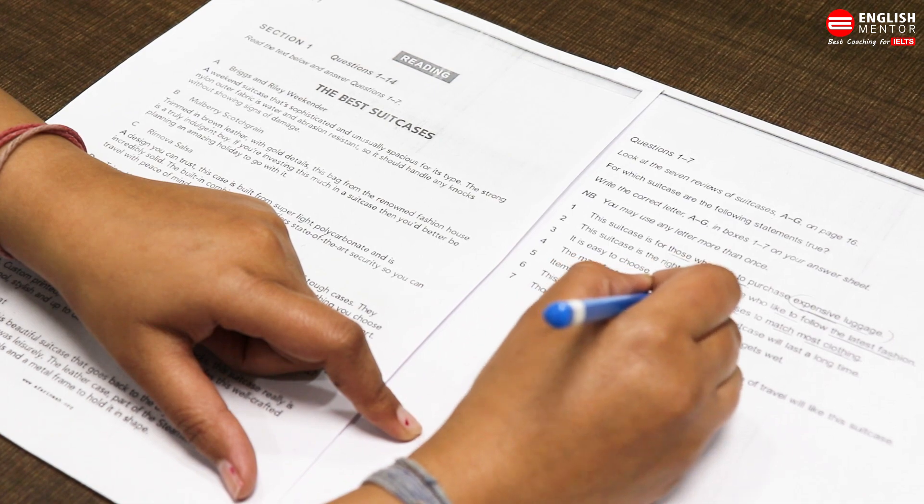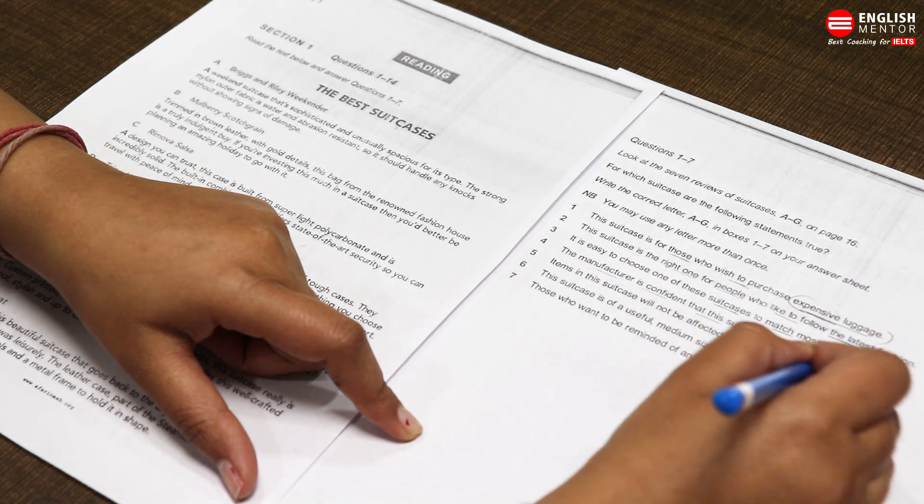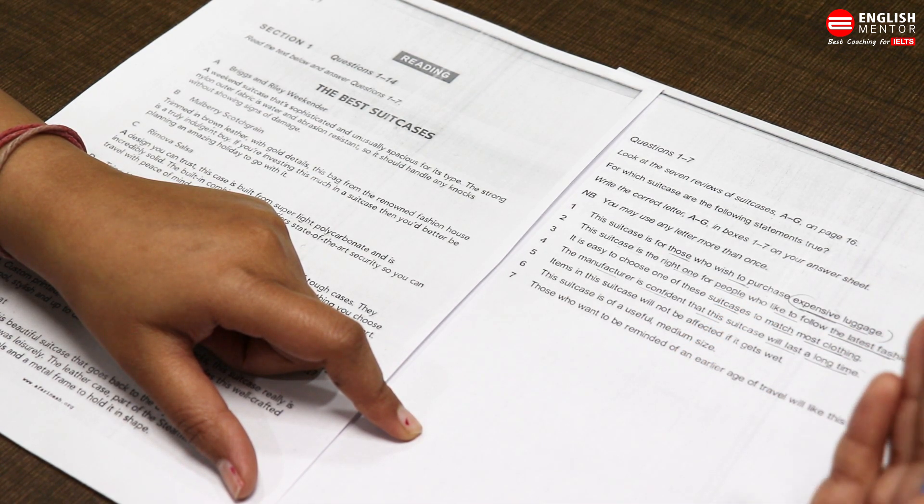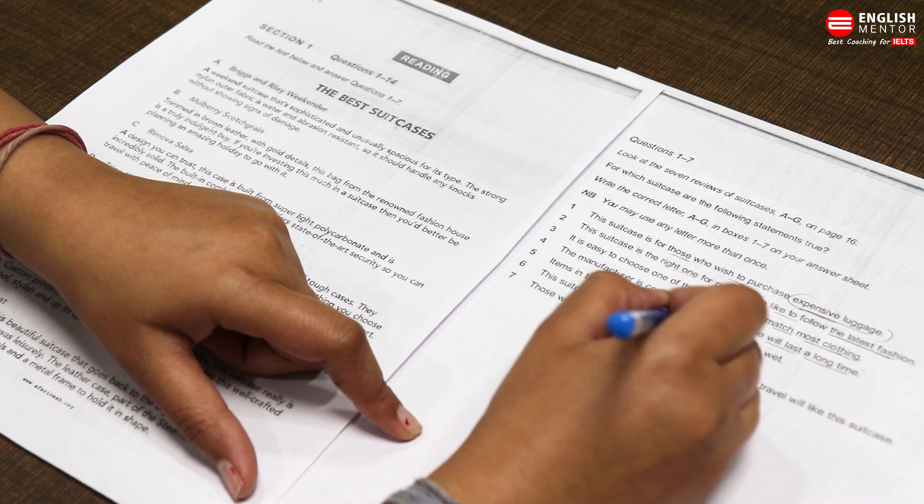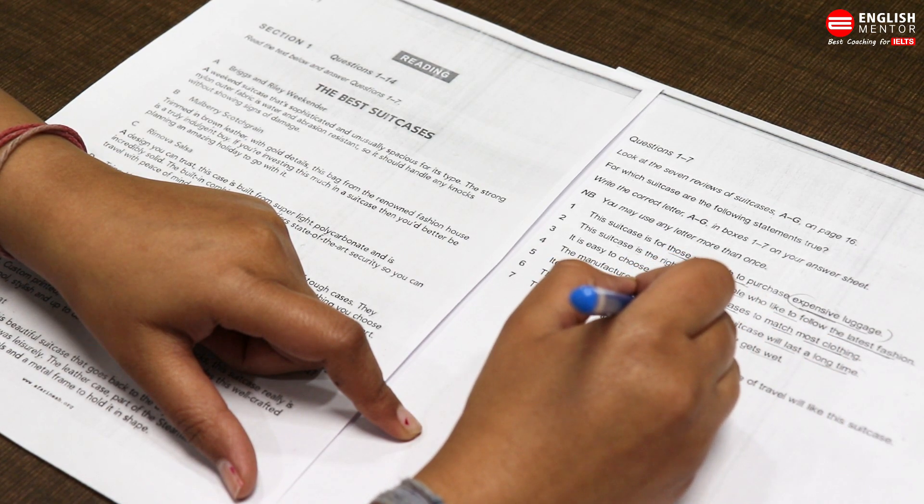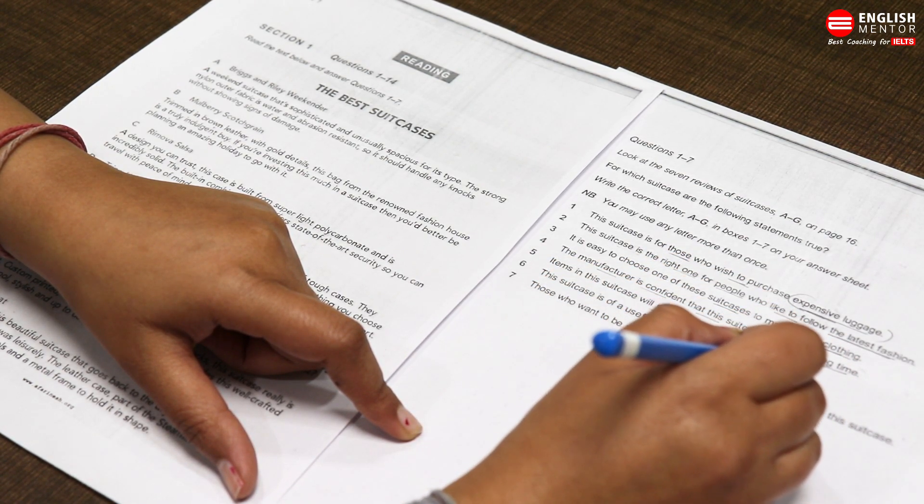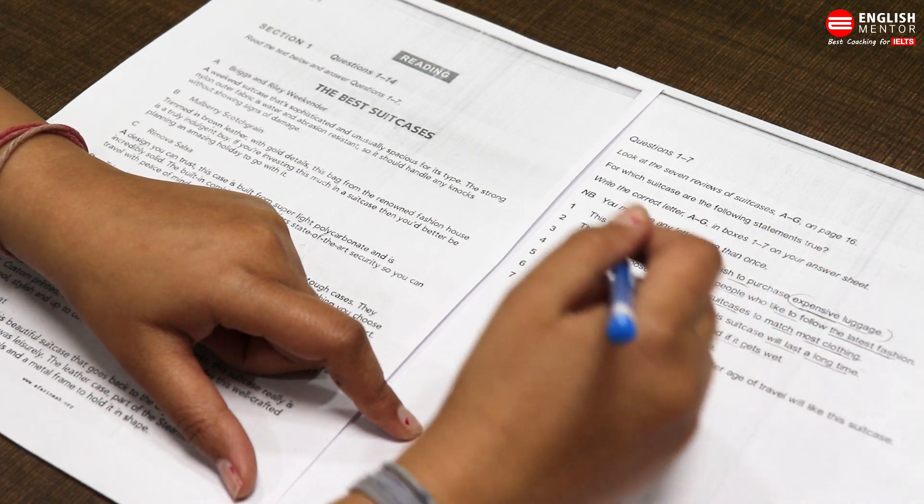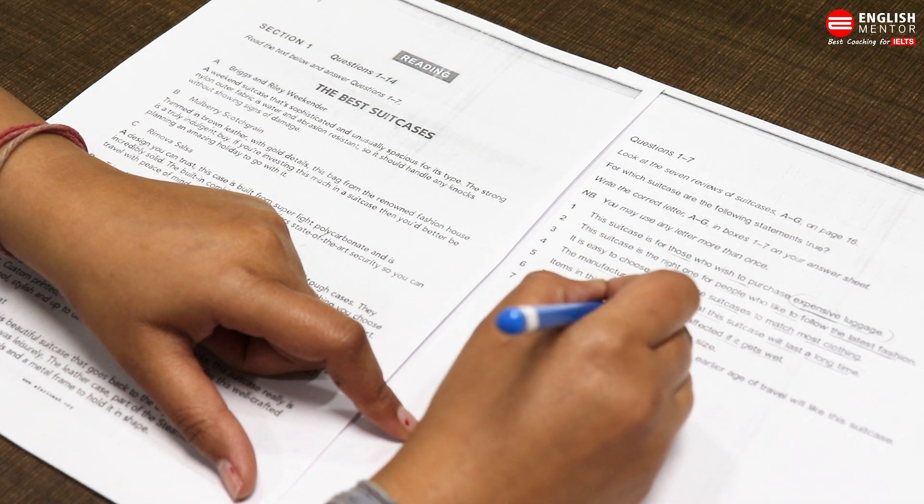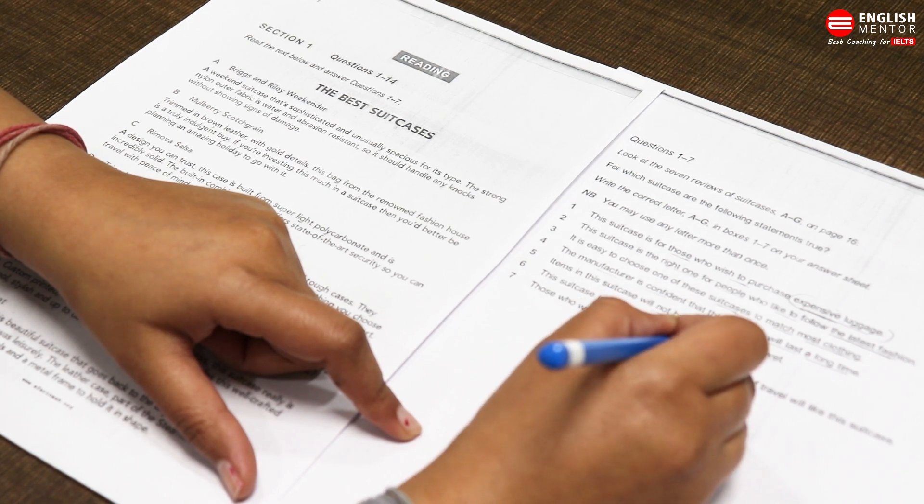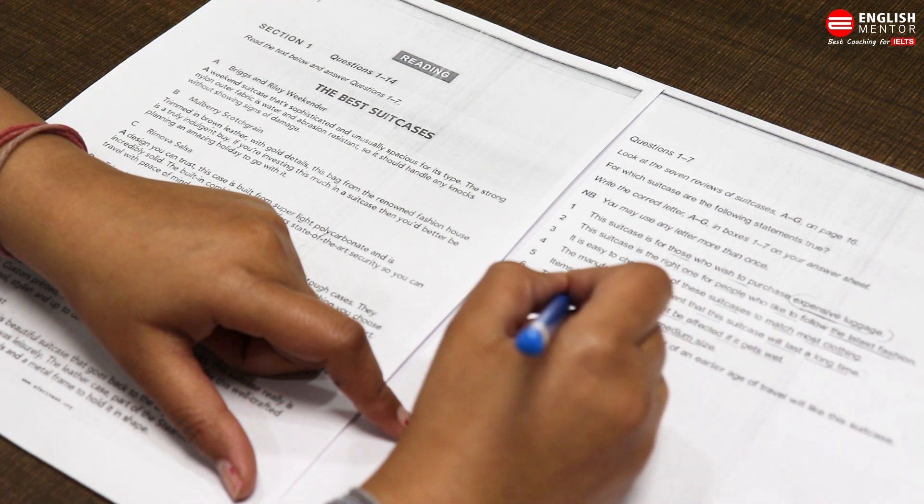Question four: The manufacturer is confident that the suitcase will last a long time. It means here they are talking about the durability of this suitcase. Ki yeh jo suitcase hai, yeh long lasting hai. Question five: Items in this suitcase will not be affected if it gets wet. Is suitcase mein rakhi hui items effect nahi hongi agar suitcase gila ho jata hai. Matlab resistance par baat kar rahe hain. Question six: This suitcase is of useful medium size. Yeh useful bhi hai aur compact in size hai, medium size ka hai.